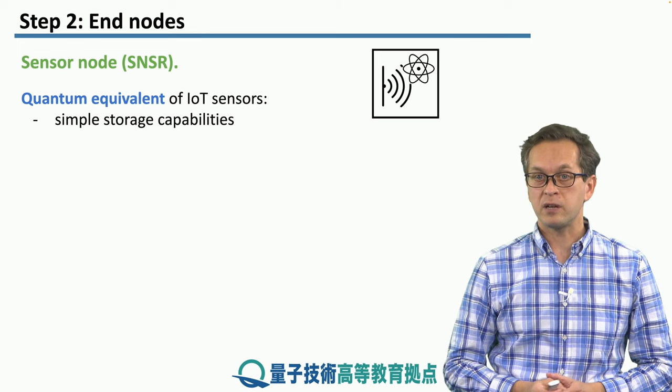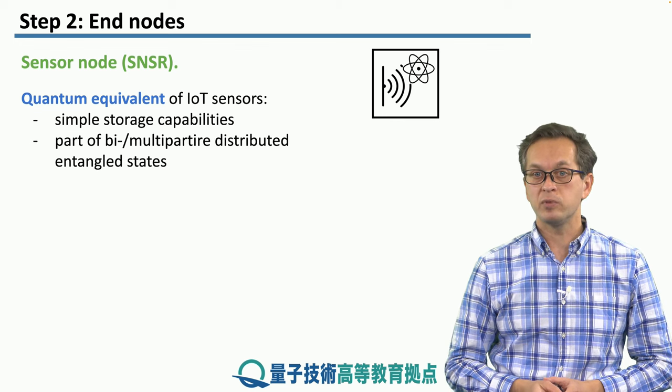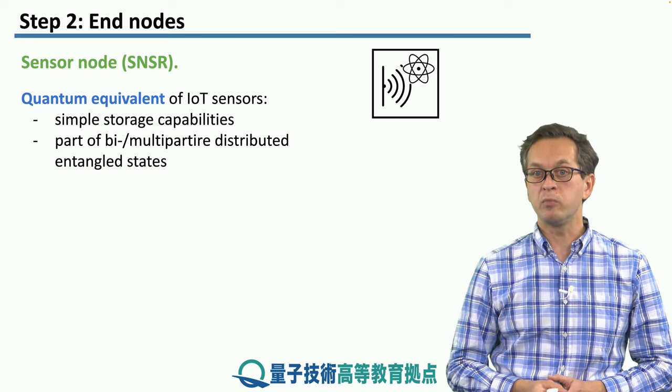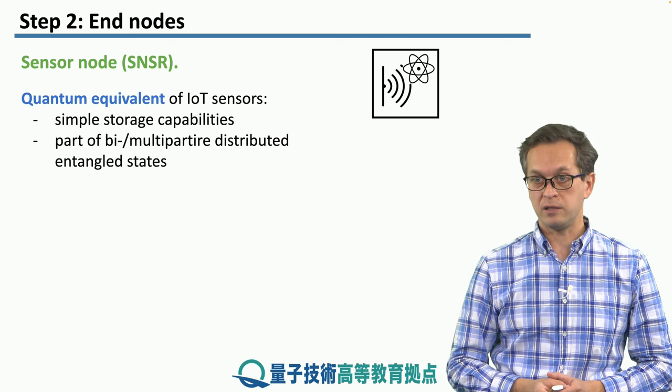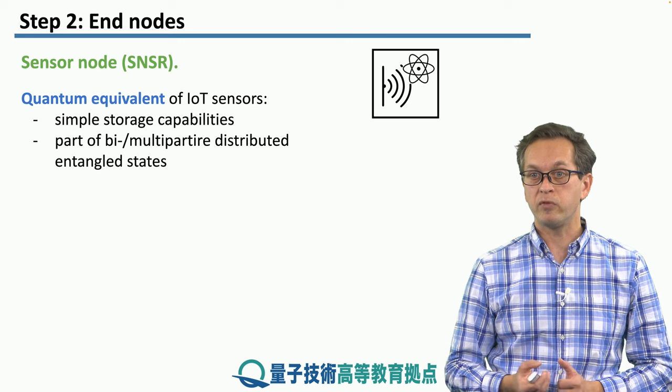So these are, they have some quite simple storage capabilities, and really their main job is to store bipartite or multipartite distributed entangled states. And it's these entangled states which then aid them in performing the sensing.